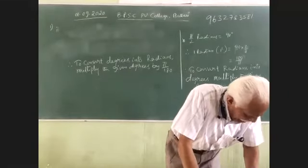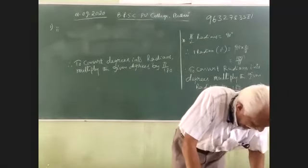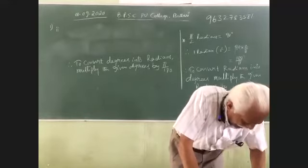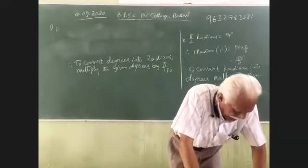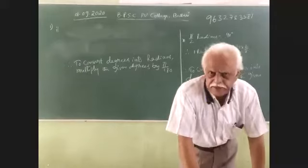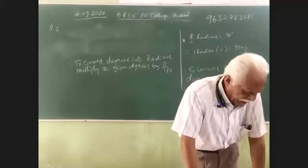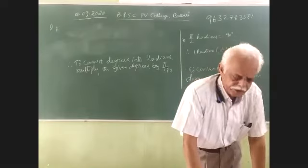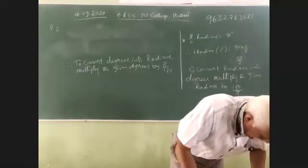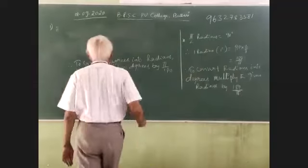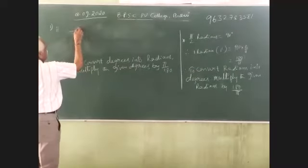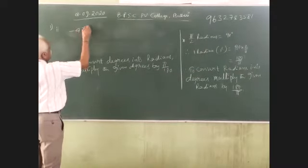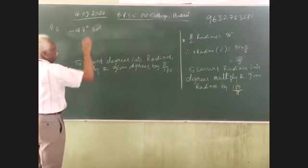Problem number one, bit number two - you are asked to convert degrees into radians. Find the radian measure corresponding to the following degree measure. Degree measure is given, we have to convert into radian measure. Now this is minus 47 degrees 30 minutes.